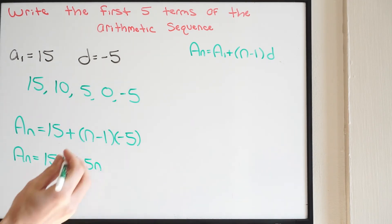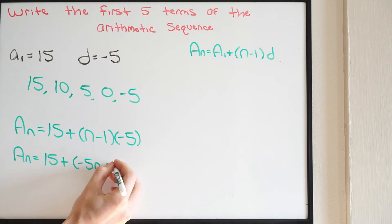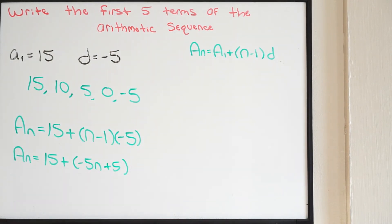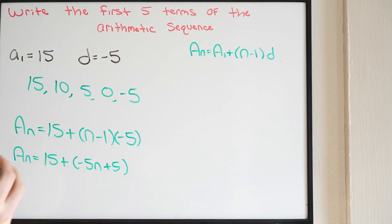and then we're going to get plus 5. Let's go ahead and combine our like terms now. So we have that here and here. So A of N is going to be equal to 20.